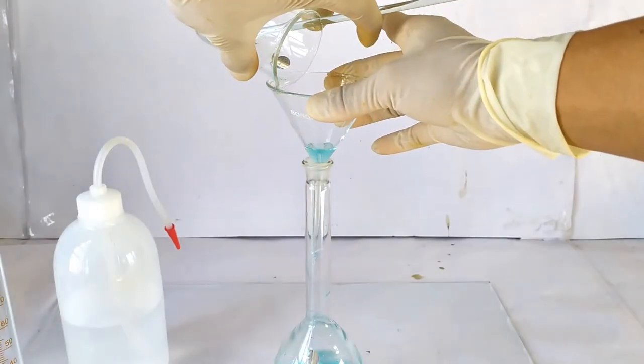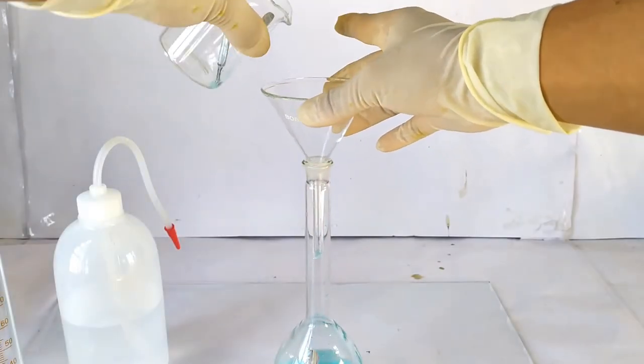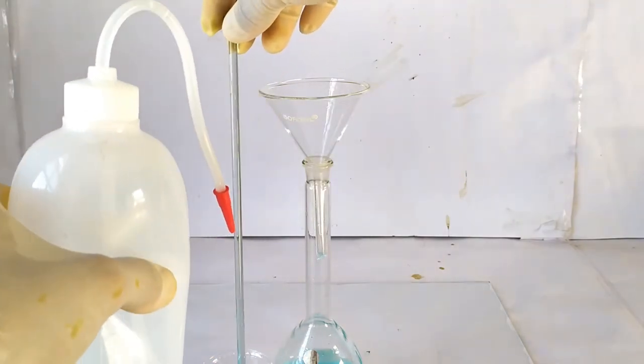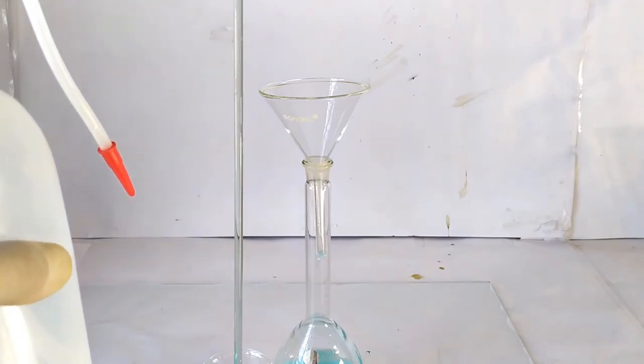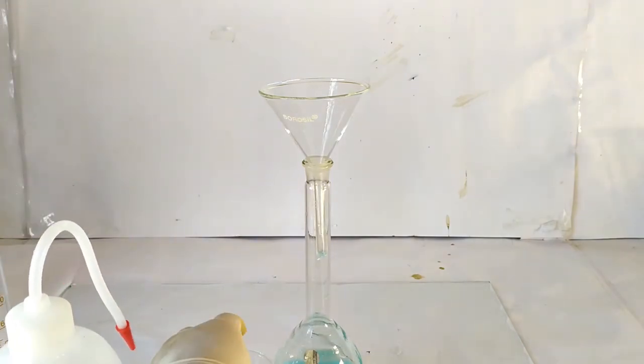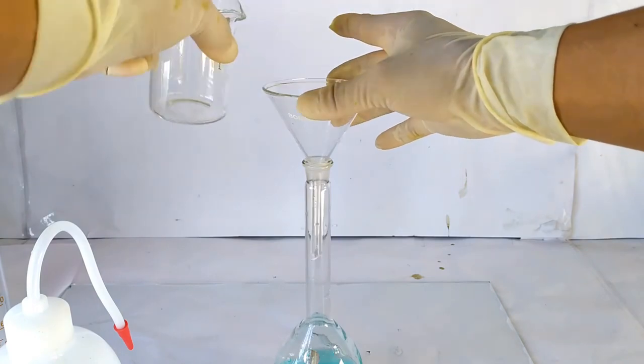Now transfer the solution from the beaker into the 200 ml volumetric flask or 250 ml measuring cylinder. Rinse the beaker and stirring rod a few times using minimal quantities of distilled water and transfer the rinsings into the flask or cylinder.